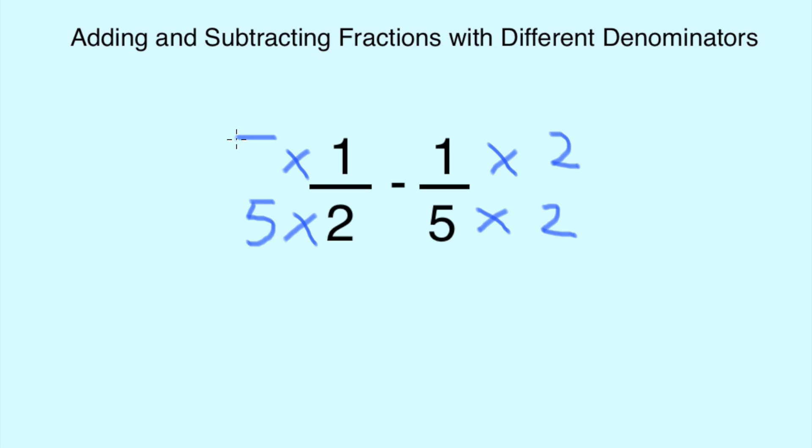When this is rewritten, it will be 5 over 10 minus 2 over 10. Now I have the same denominators.